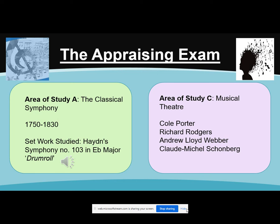The exam part of the course is focused around developing your listening and appraising skills, and at Arius we do the following two areas of study. We look first at the classical symphony, and the works we study date from 1750 to 1830, finishing with Berlioz's Symphony Fantastique. Alongside that we have a set work — Haydn's Symphony No. 103 in E-flat major, The Drumroll — which we have to annotate on the score and learn in quite a lot of detail.